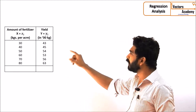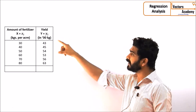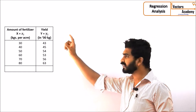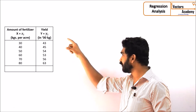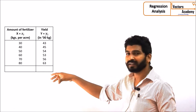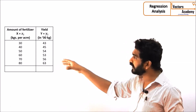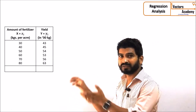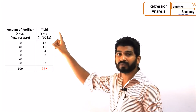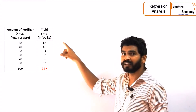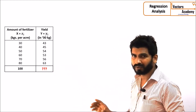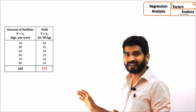For example, if you look at this table, this table gives you the amount of fertilizer which is used and what is the yield we get from the farm. If you use 30 kgs of fertilizers, the yield which we get is 4300 kgs. Suppose if you need to predict what would be the yield if you use 100 kgs of fertilizers, this table does not contain that data, but by predicting the relation between the fertilizer used and the yield, we can find out what would be the yield if 100 kgs of fertilizers is used. This prediction can be found out using regression analysis.